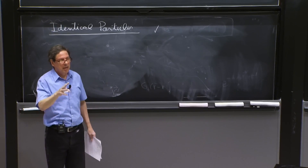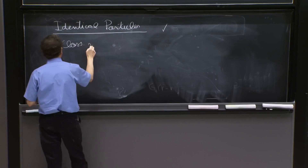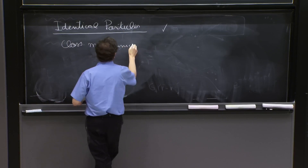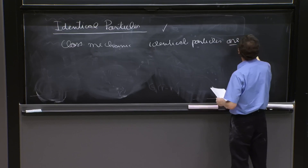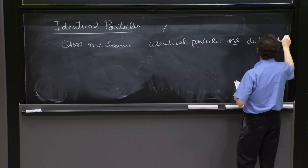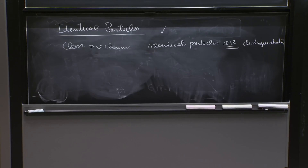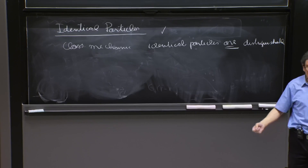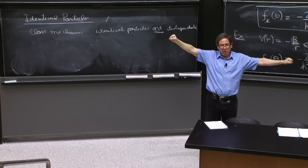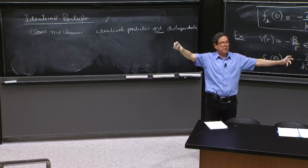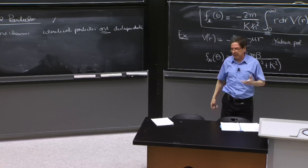In classical mechanics, identical particles are distinguishable. How are they distinguishable? You have two particles, and you can follow them whenever they're moving. You can say this is particle one, this is particle two. With quantum mechanics, you can do the same thing when the particles are really far away and don't come close together — there is some sense in which classical mechanics sometimes applies, and that's when they're far away.